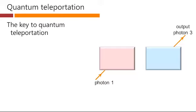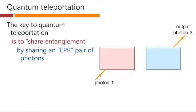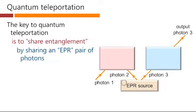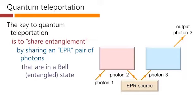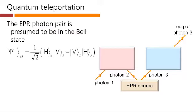The key to quantum teleportation is to share entanglement, and we can do that by sharing an EPR pair of photons. So here's our EPR source, and EPR stands for Einstein, Podolsky, and Rosen. And those photons, this pair that we create here, are going to be in a Bell state, an entangled state.